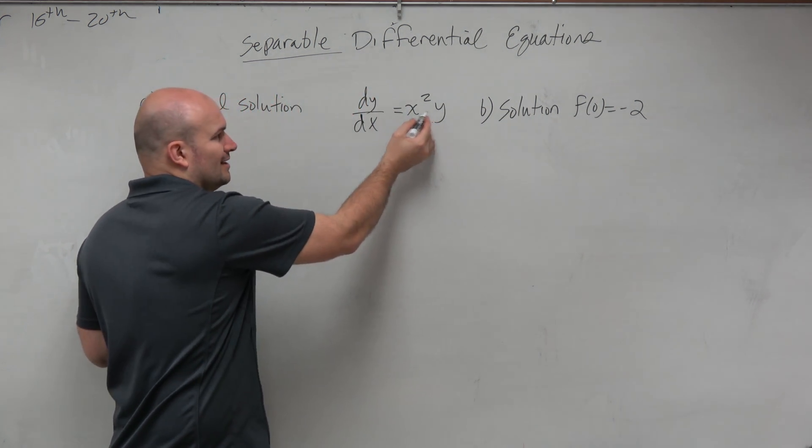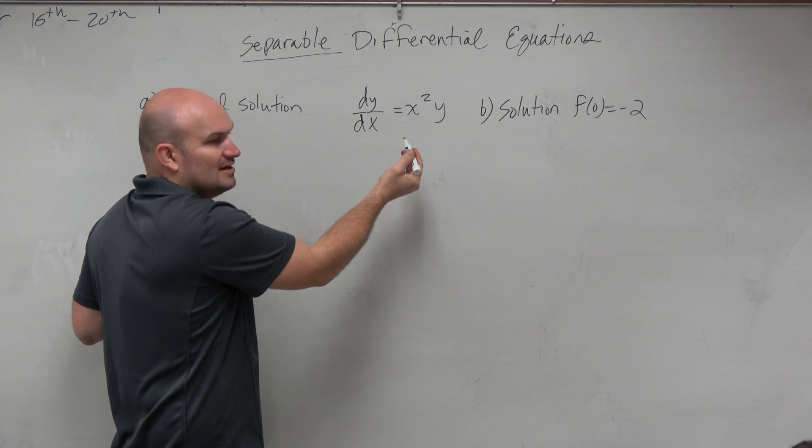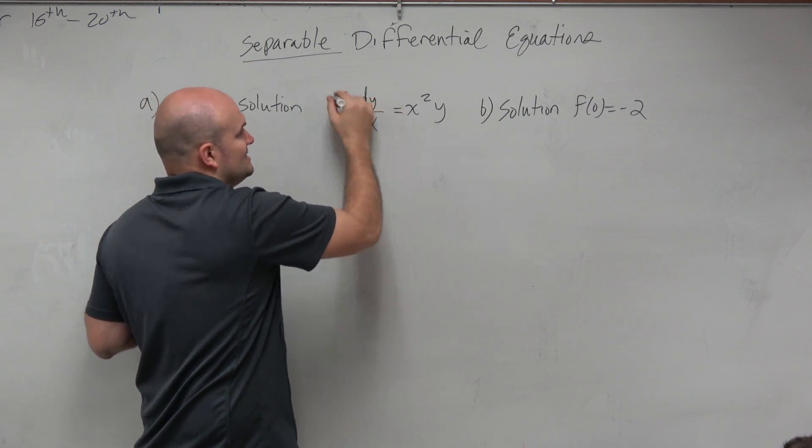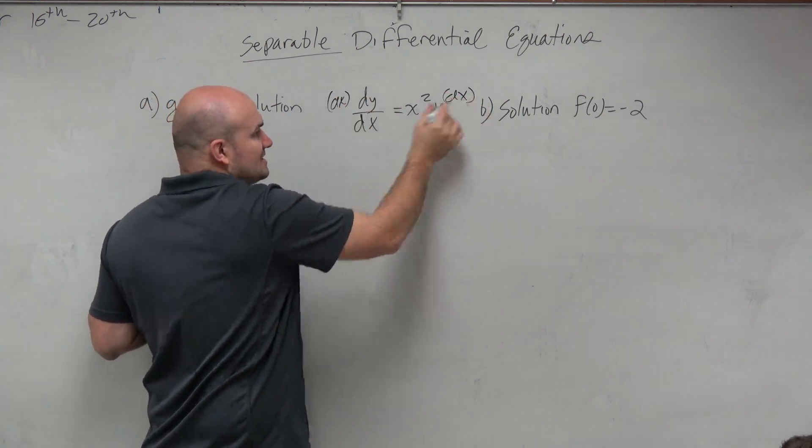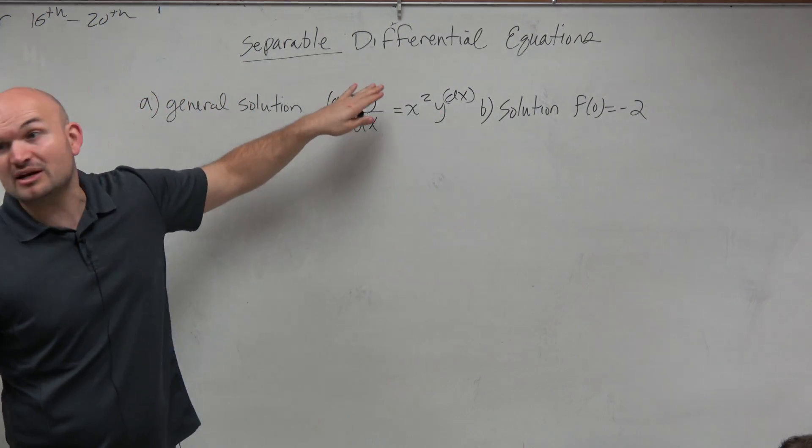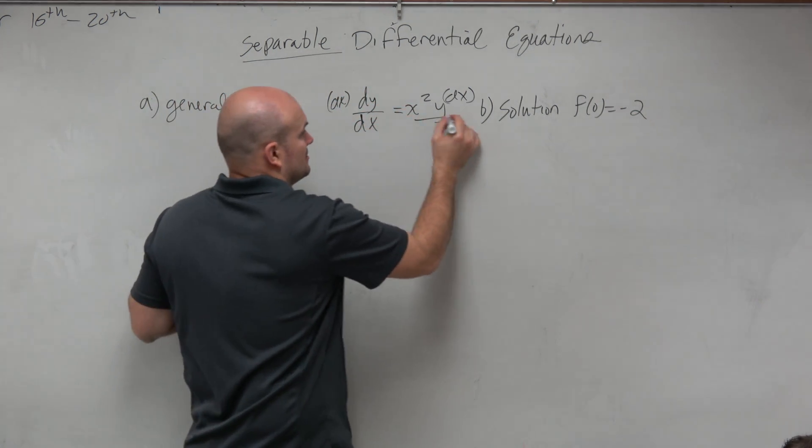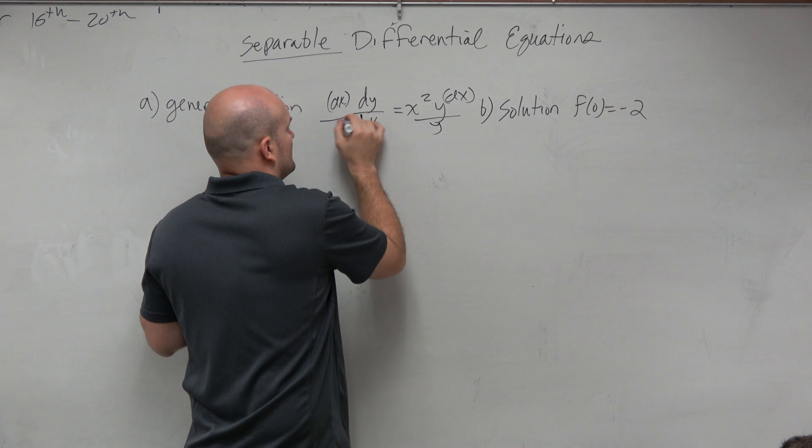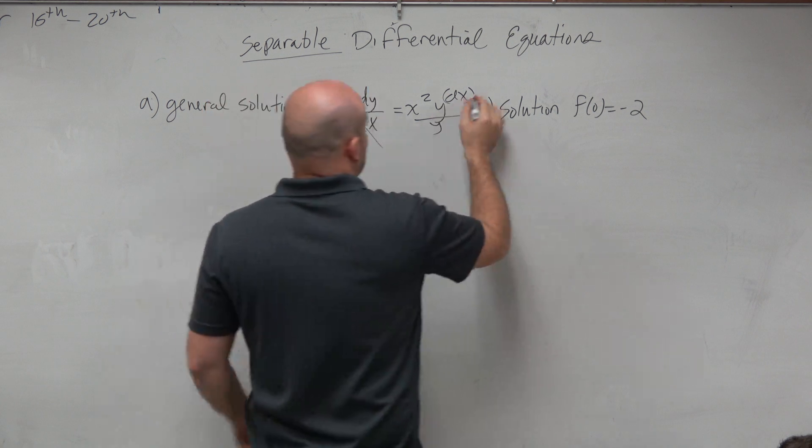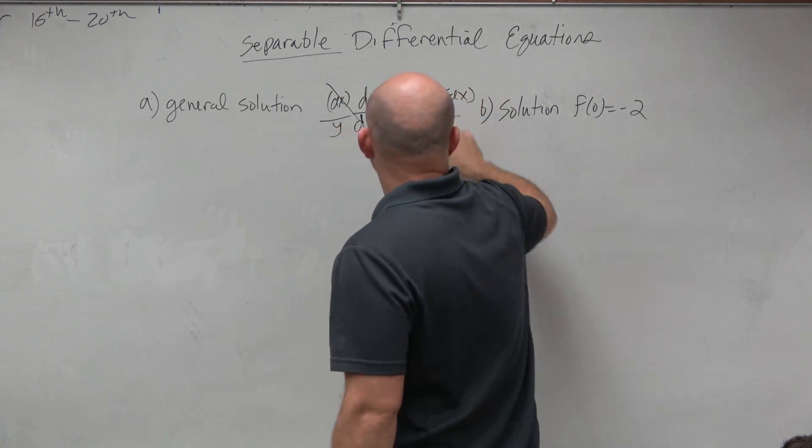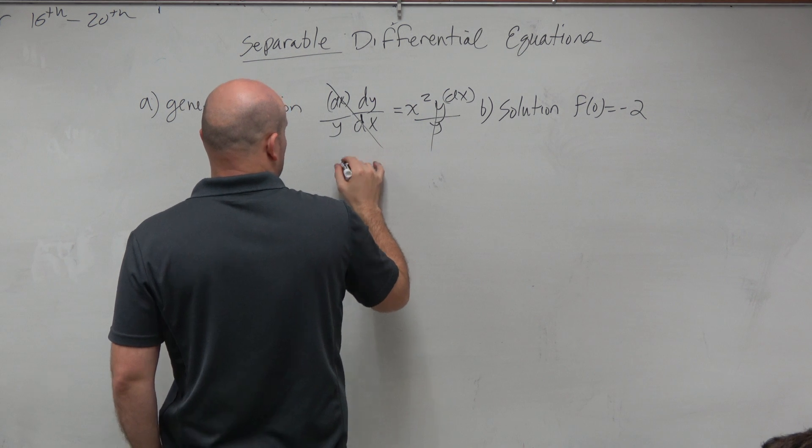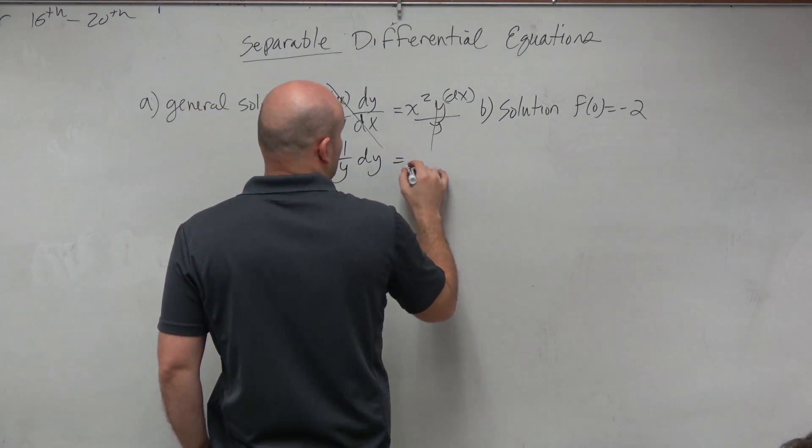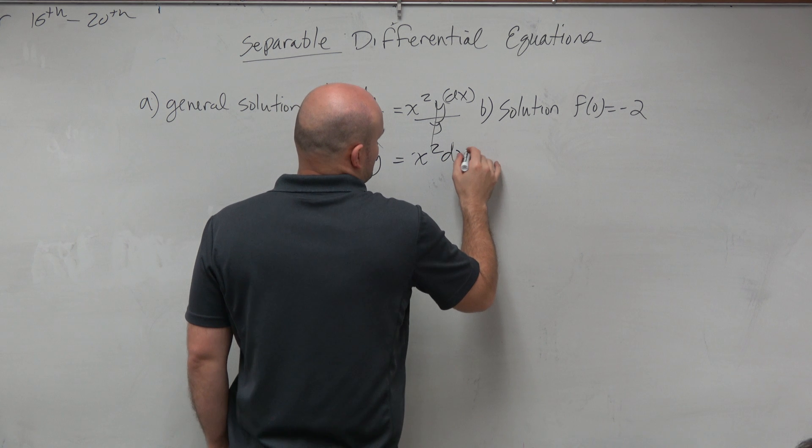So over here, we can multiply by dx on both sides. That's kind of the fastest and easiest thing to do. But in this case, you see, to get the y to the other side, we're going to have to divide by y on both sides, right? So therefore, when I have this out, I'm going to be left with 1 over y dy equals x squared dx.